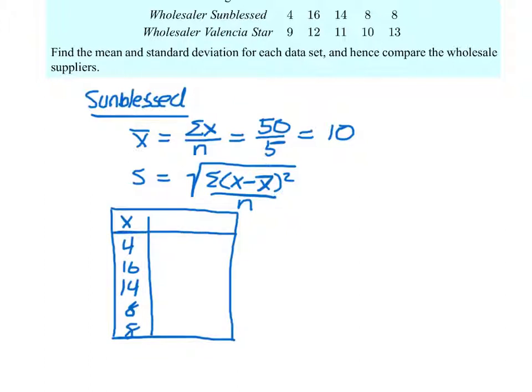And in the next column, we're going to have x minus x bar. So we're going to calculate the deviation, just the single deviation for each data point first. And so we needed to know the mean first. The mean was 10. So using that, I get 4 minus 10 equals negative 6. I get 16 minus 10 equals positive 6. And you can do the rest.